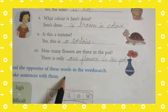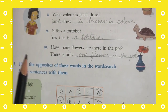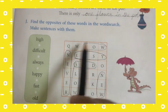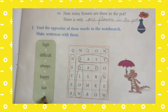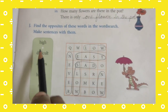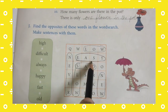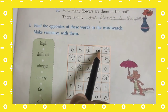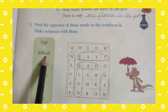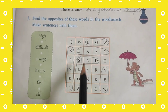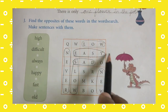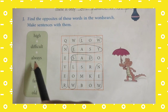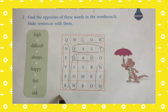Find the opposite of these words in the word search. Here they have given a clue box with some words, and you have to find their opposites. For example: high — low; difficult — easy. Circle the answer. Always — the opposite word is never.